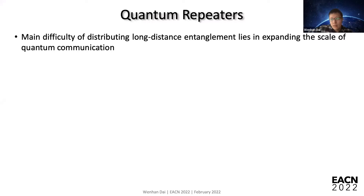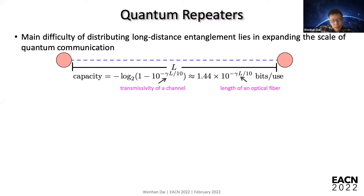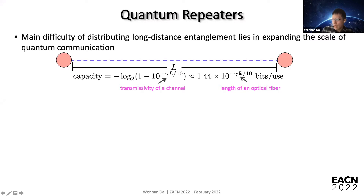The reason is that you have this exponential decay. Suppose you have two nodes that are far apart by a distance L. The capacity to distribute entanglement between these two nodes actually decays exponentially — L is in the exponent.